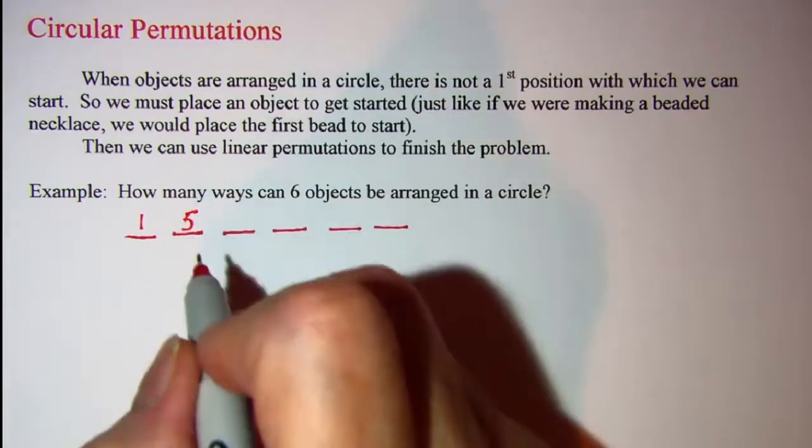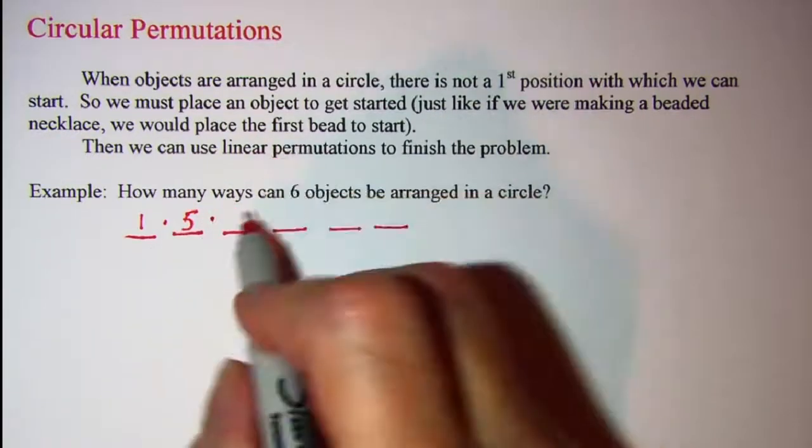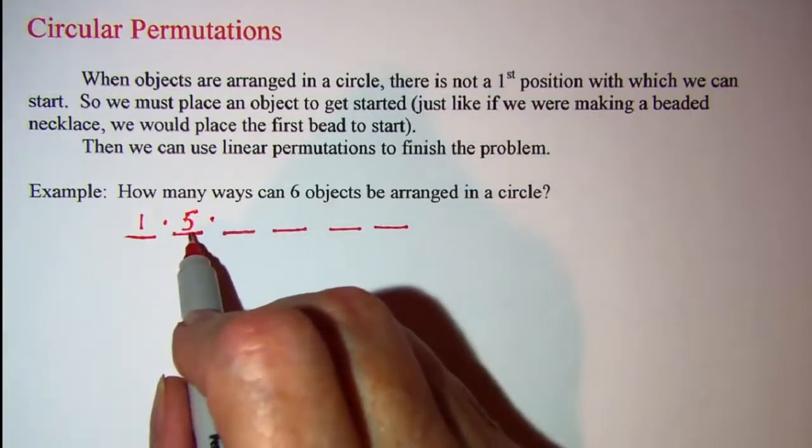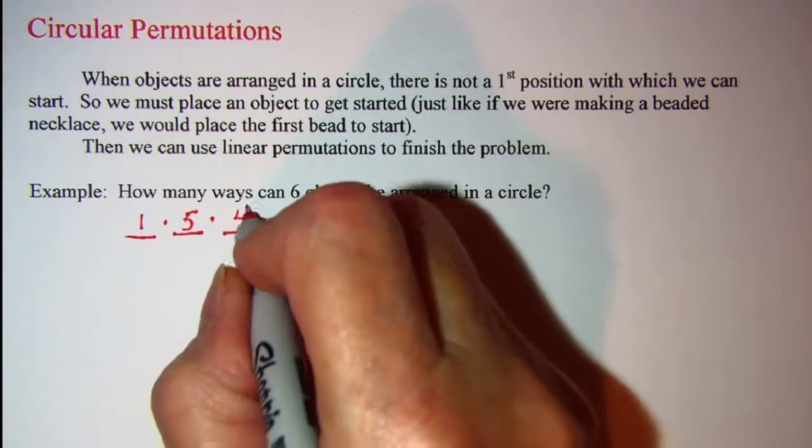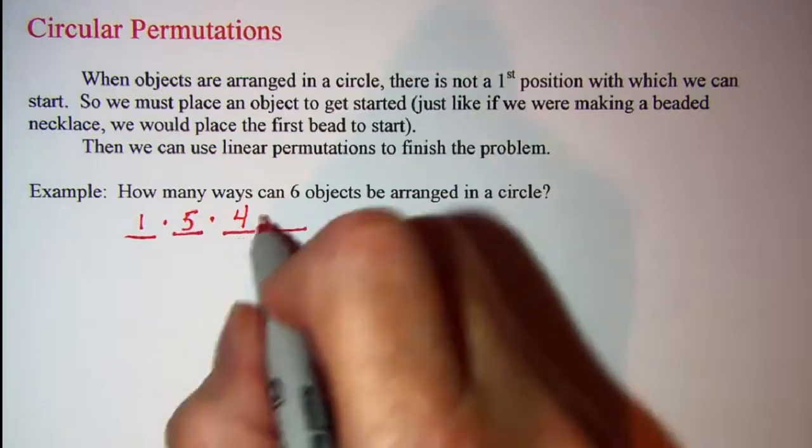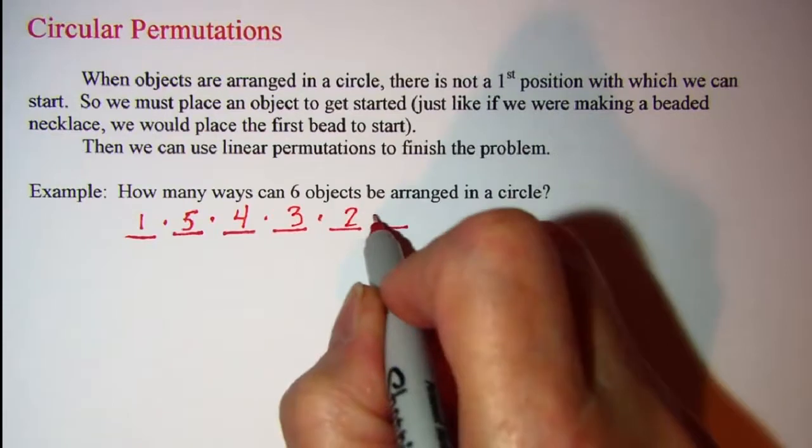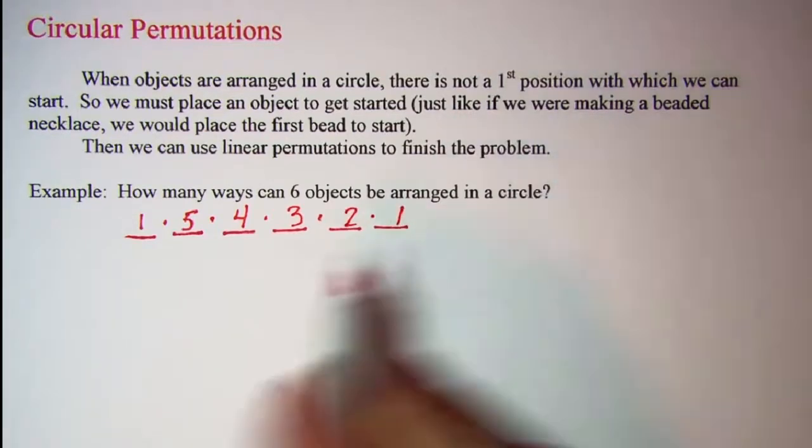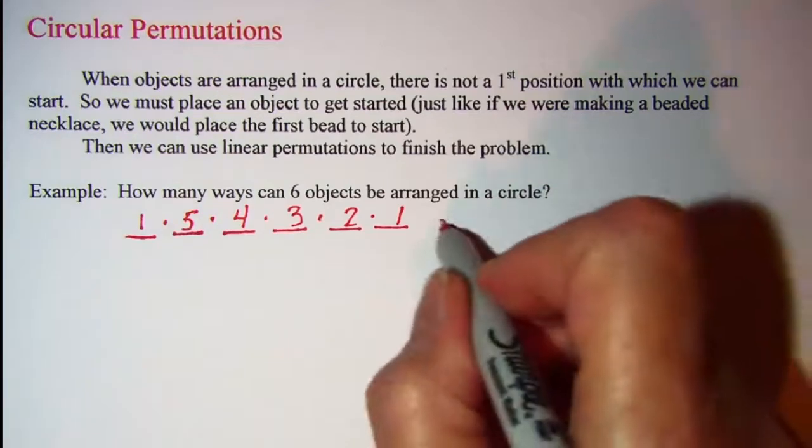So we have five ways to choose this next object that we can put down. And our fundamental counting principle says we're going to multiply these ways. And then once I put that object down then I only have four left for this position, and then three for this one, two, and one. So the product here is a hundred and twenty.